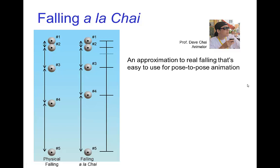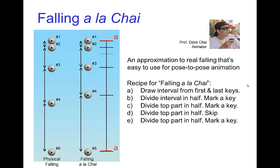There is another extension of this idea which Dave Chai, an independent animator, showed me. This idea is similar to fourth down at half time. We start with the first and last drawings and put a key at the halfway position, then put another key at the halfway position between the middle and the top. We mark the next halfway position going up, but we don't put a key there — instead we use that to estimate the last key we're going to mark from the apex.